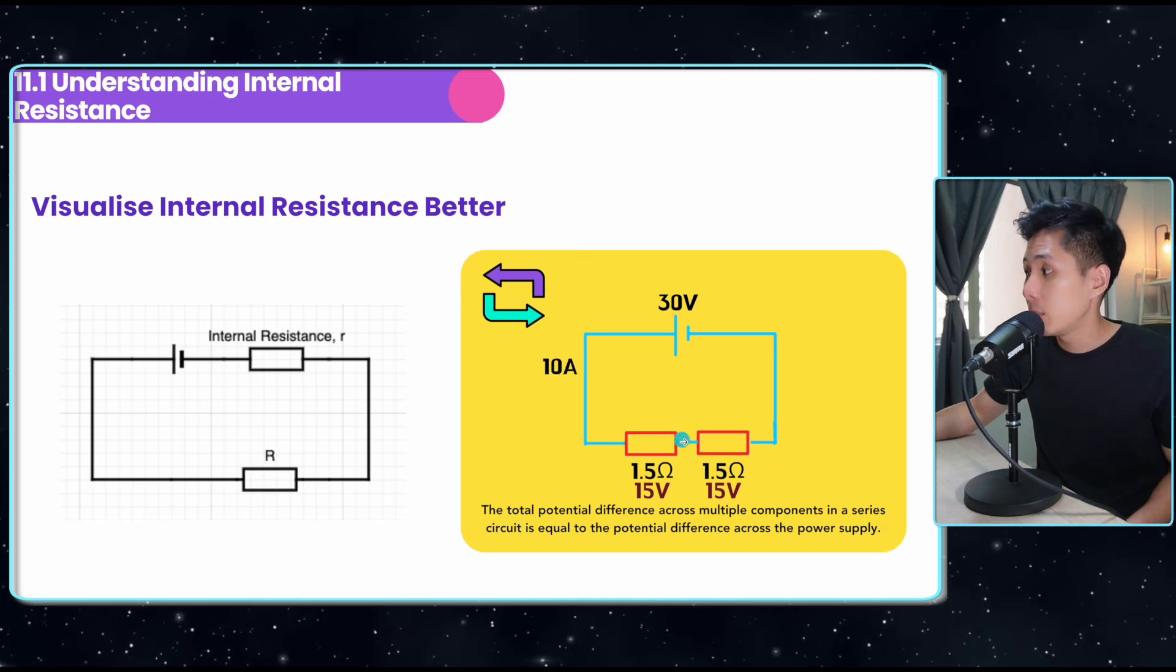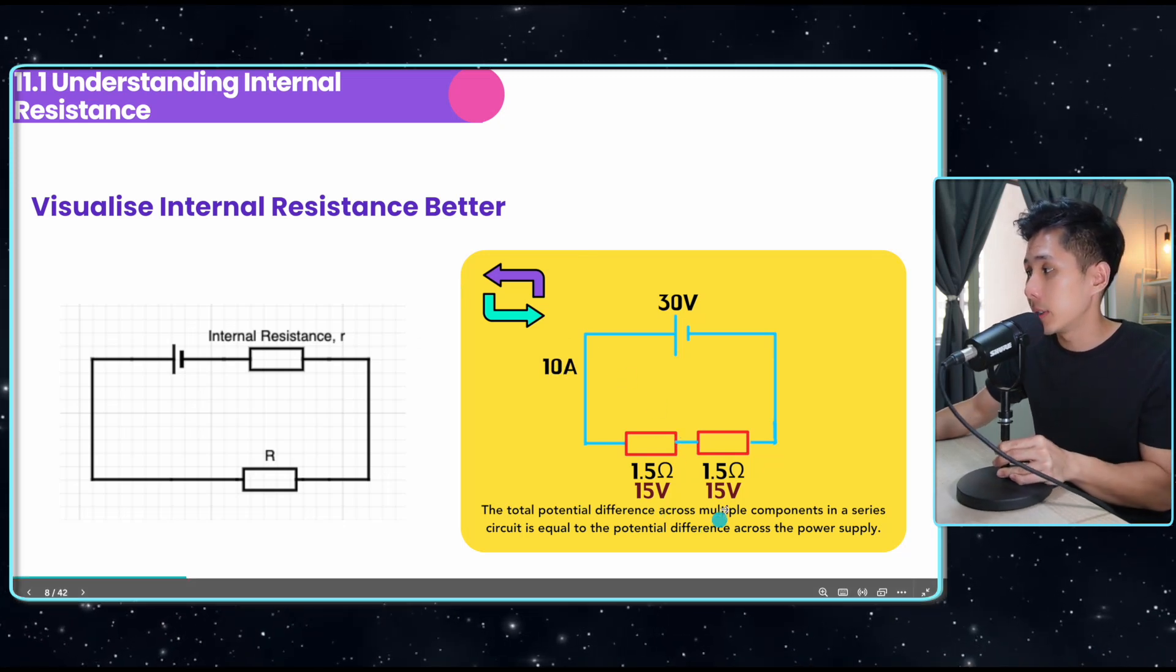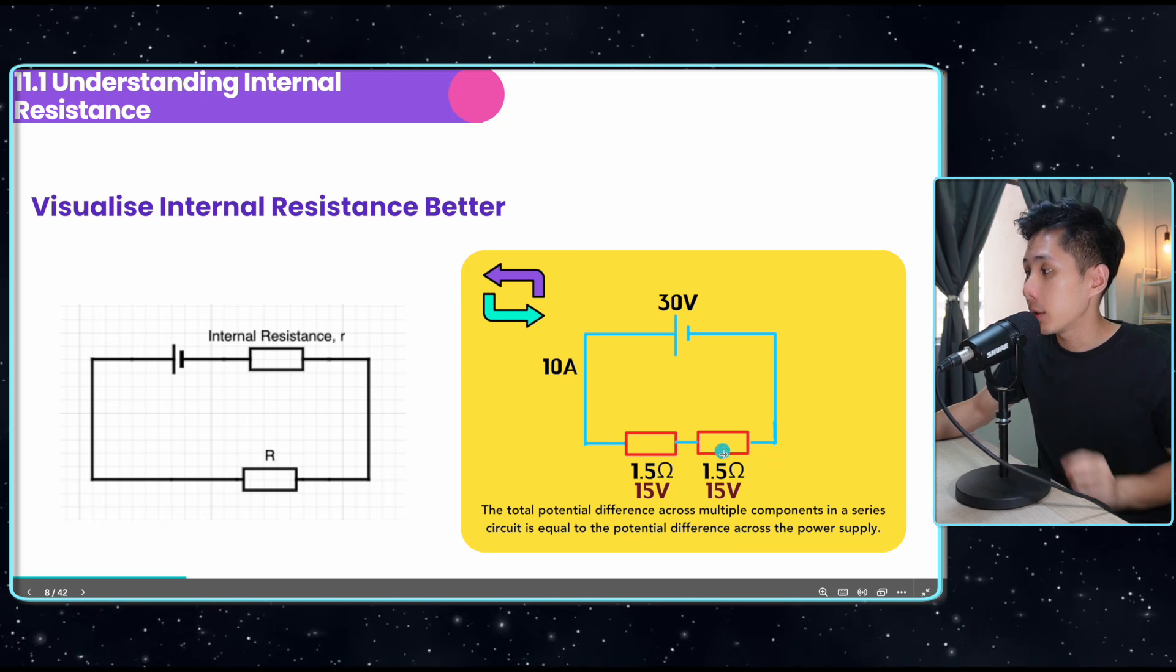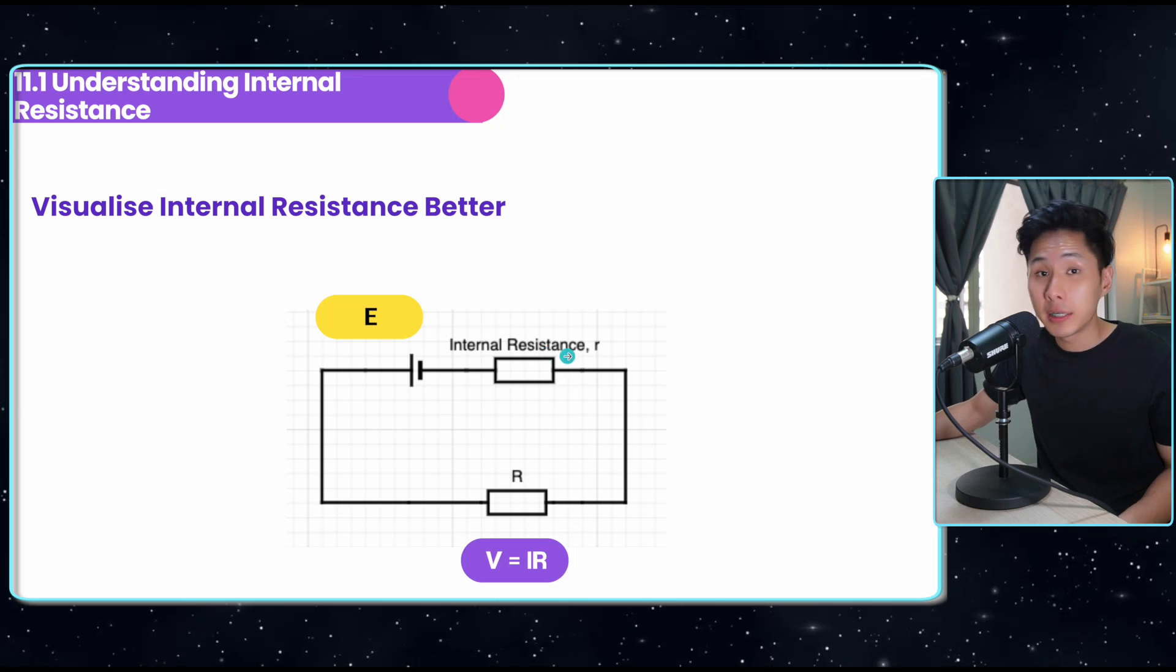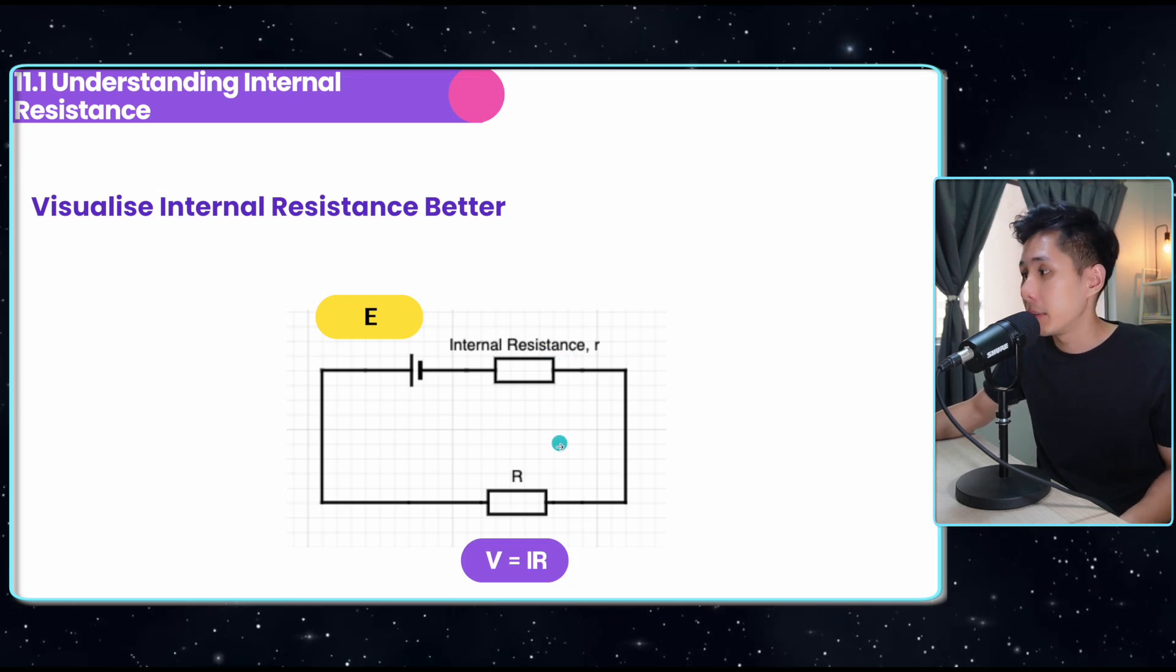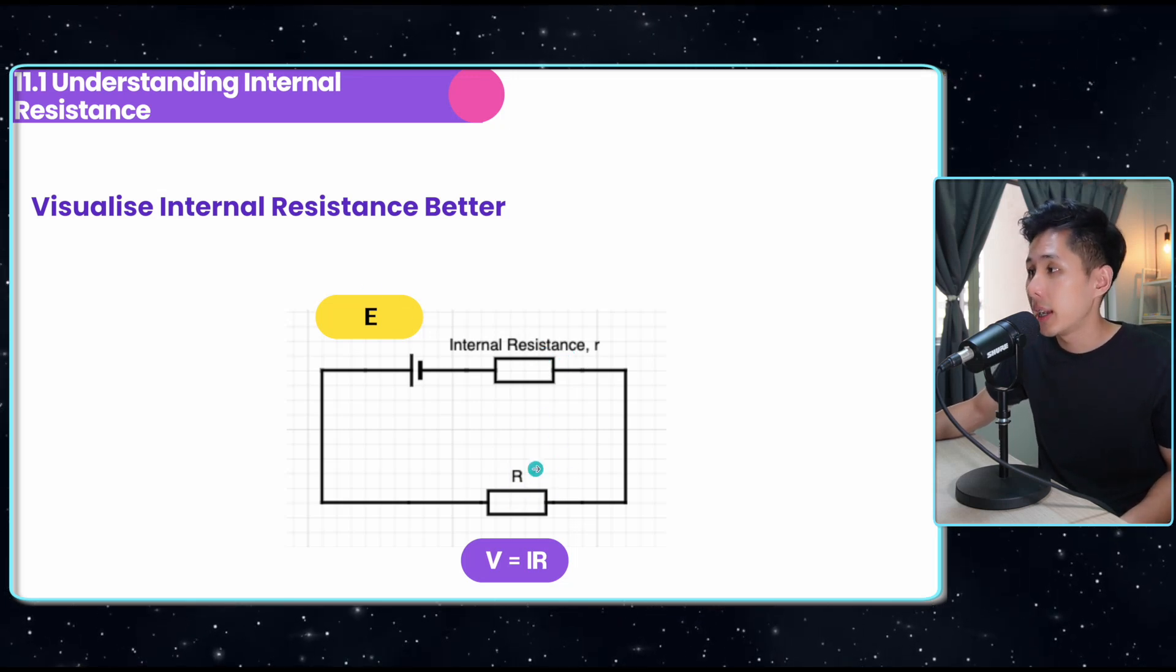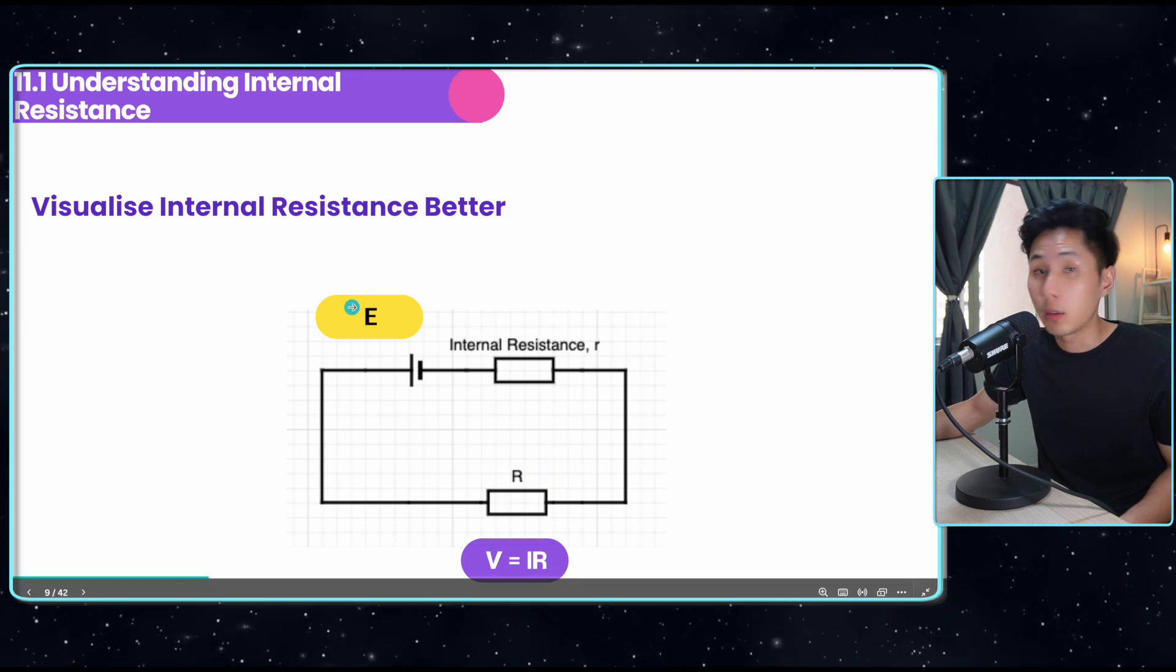This is what we learned in chapter 9. We learned that the total potential difference across multiple components is equal to the potential difference across the power supply. Before we learned internal resistance, this is what we might think: because we only have one component, then V should be equal to E.